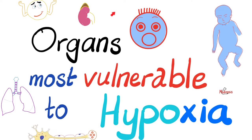In previous videos, we talked about cell injury, which is reversible, unlike cell death, which is irreversible. What's the most common cause of cell injury? If you say hypoxia, you're absolutely correct. We have talked about hypoxia before and the three types of hypoxia, namely ischemia, hypoxemia, and hemoglobin abnormalities. We also talked about the four causes of hypoxia, which include stagnant hypoxia, hypoxemic hypoxia, histotoxic hypoxia, and anemic hypoxia.